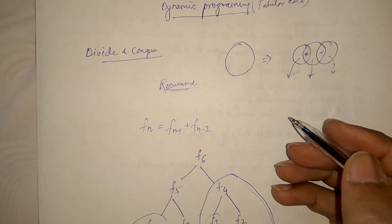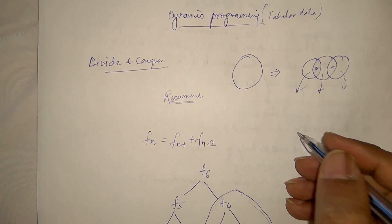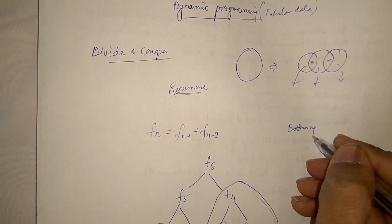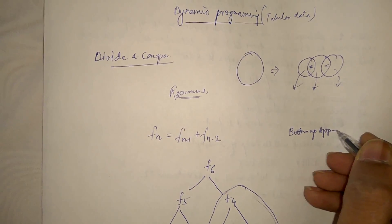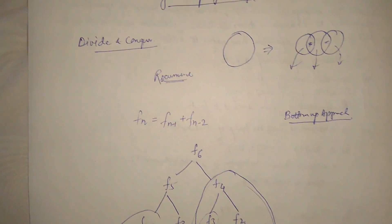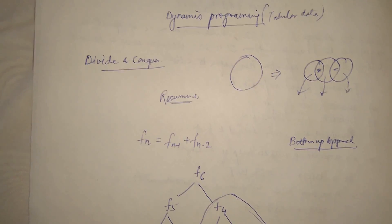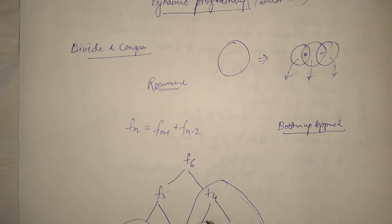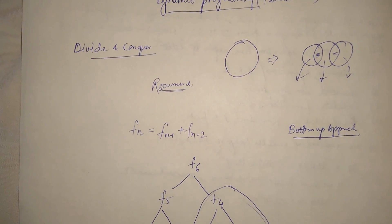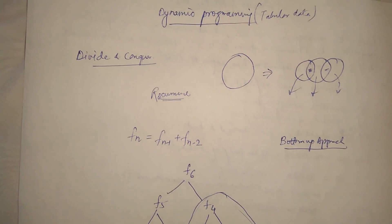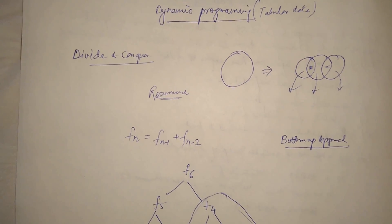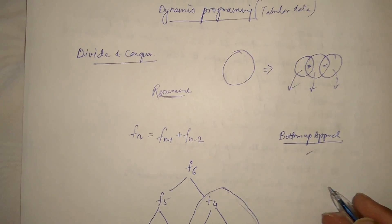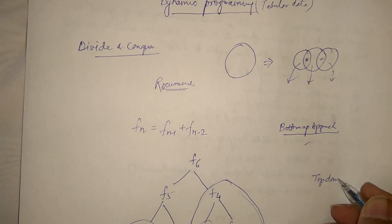So here we can apply the dynamic programming. So how do we apply dynamic programming? There are two approaches. One approach is bottom up approach. That is we can use the bottom up manner to fill our table.